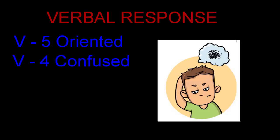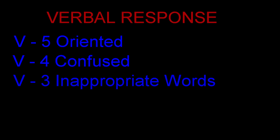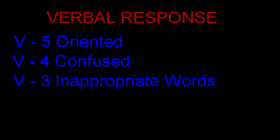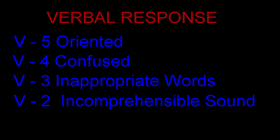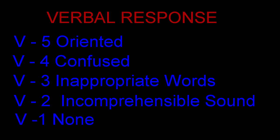V4 is confused — the patient may be answering something, but it will not be the appropriate answer to questions, or they may be confused. V3 means the patient responds with some inappropriate words that have no connection with each other — inappropriate words. V2 is incomprehensible sounds — the patient cannot converse or give answers to questions, and can only produce some sounds, especially when a painful stimulus is given. V1 is the minimum score — no verbal response at all.